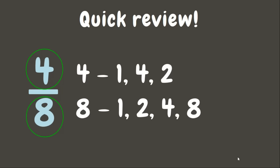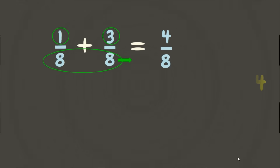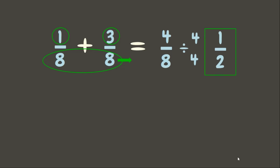Now let's get the greatest common factor — very good, it is four. Now that we know the GCF, we are going to divide the numerator and the denominator by the GCF, which is four. Four divided by four is one; eight divided by four is two. Therefore our answer is one-half. Let's check our answer by drawing some representations.